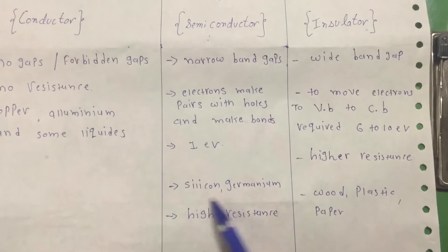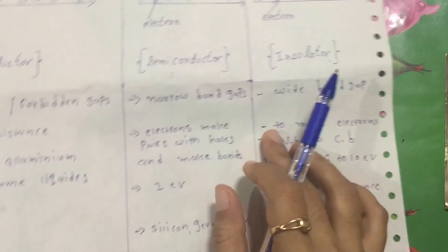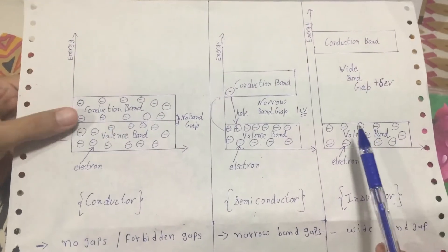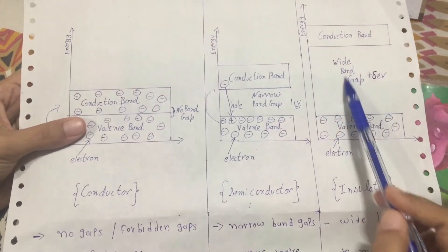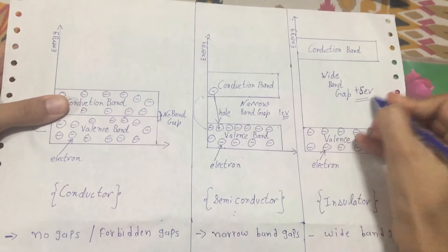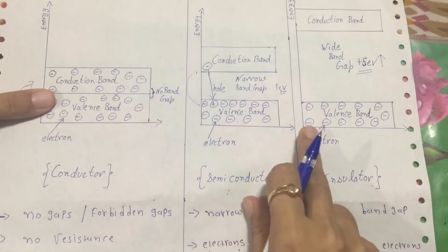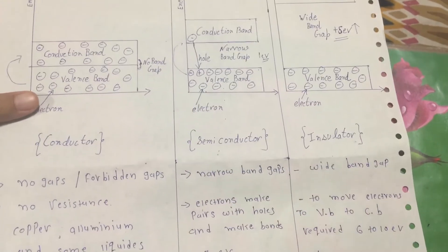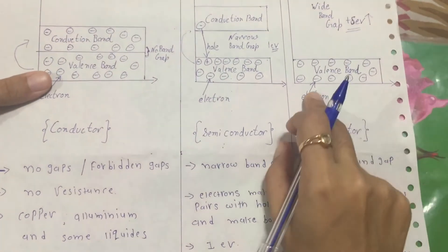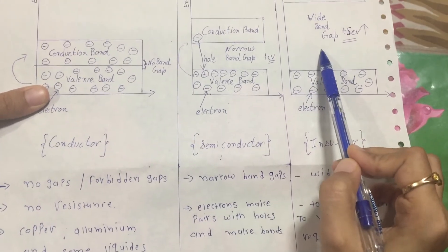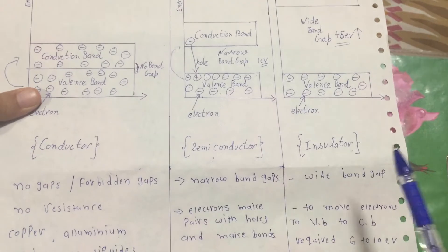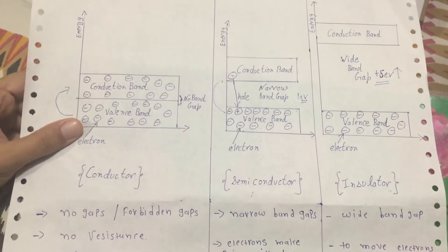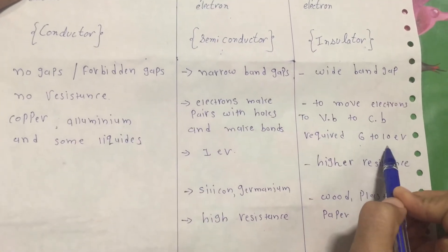Examples of semiconductors are silicon and germanium. The next topic is insulators. As you can see in the energy level diagram, there is a wide band gap in an insulator, which requires more than five volts — around six to ten electron volts.